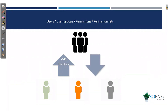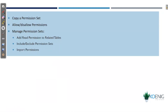This slide explains what is going to happen: you add users onto the platform, you add those users to a user group, and as an admin you assign a permission set to that user group — all users inside the user group will inherit those permissions. When we create a permission set, we can also copy it, include or exclude it from a user, import permissions, allow or disallow permissions, and add permissions to related tables.